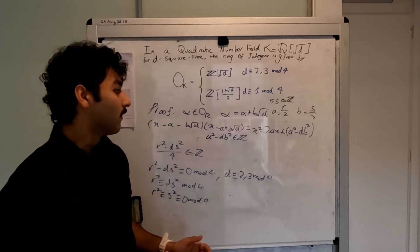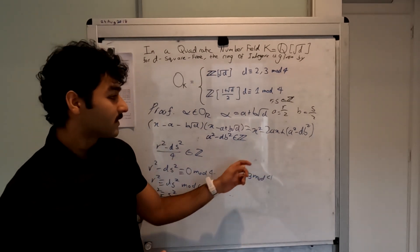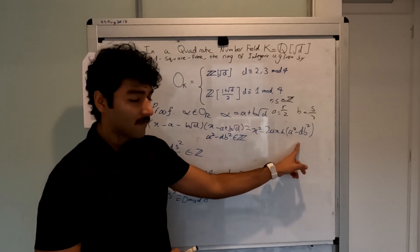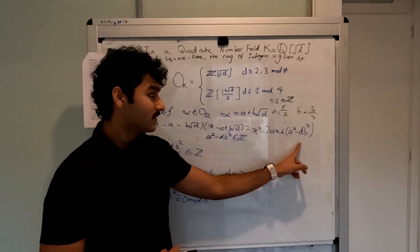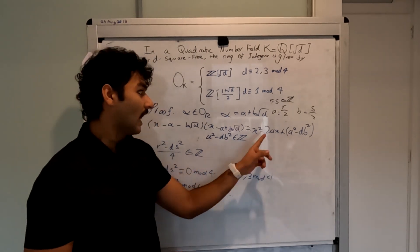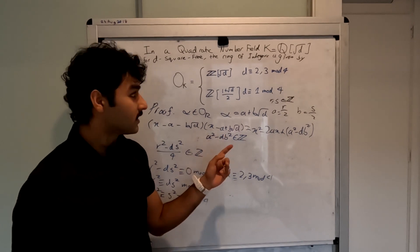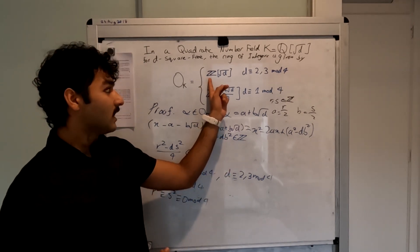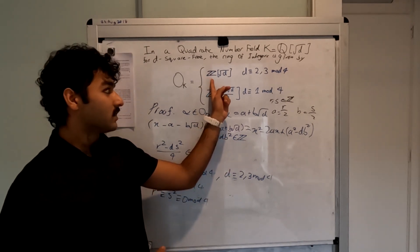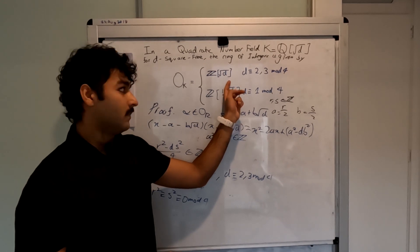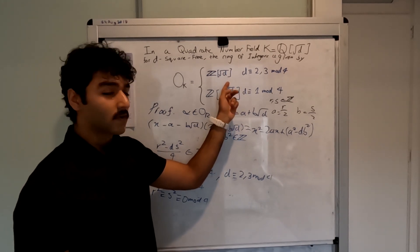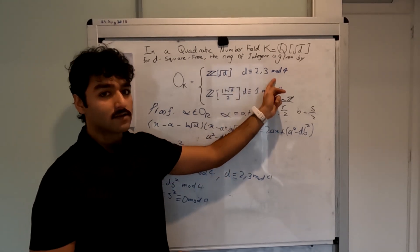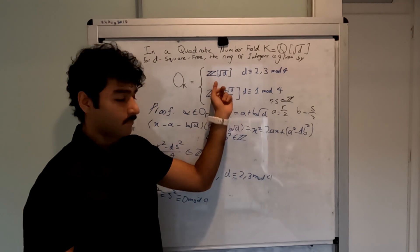Hence, for the conditions to be satisfied — that 2a is an integer and a squared minus db squared is an integer — it is sufficient that we choose any integral combination of √d and 1. That is, the ring of integers when d is congruent to 2 or 3 mod 4 is Z[√d].